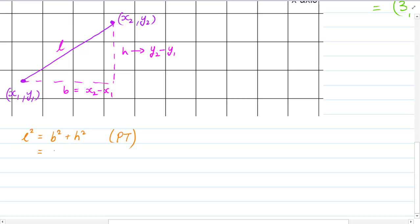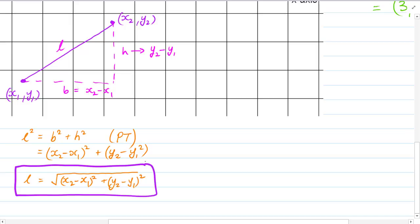But we know that b squared is x2 minus x1 squared. And we know that h squared is y2 minus y1 squared. So we can write this more generally as L is equal to the square root of x2 minus x1 squared plus y2 minus y1 squared. And this is our formula. So of course, I'll stick a big colorful box around it to remind you of that. That formula will work for any two given coordinates.